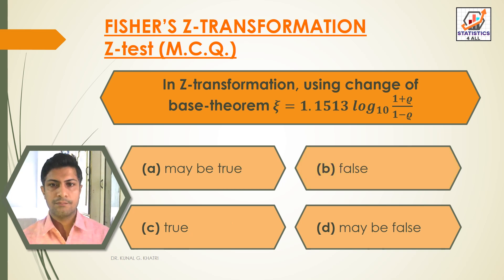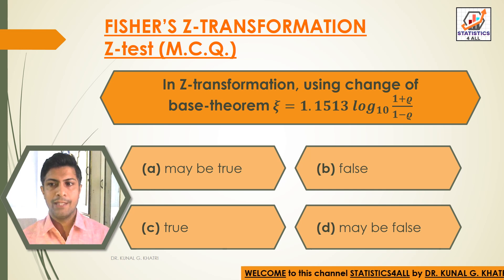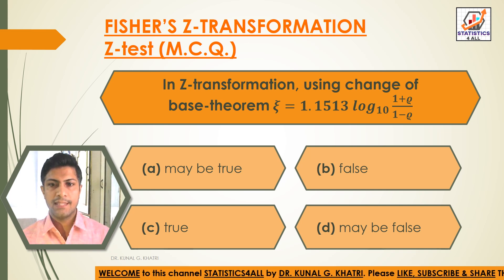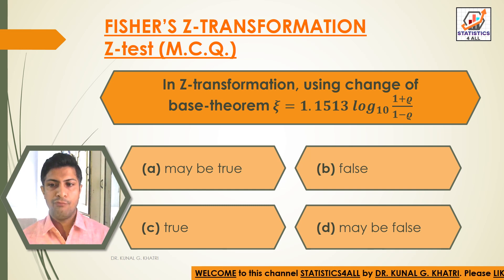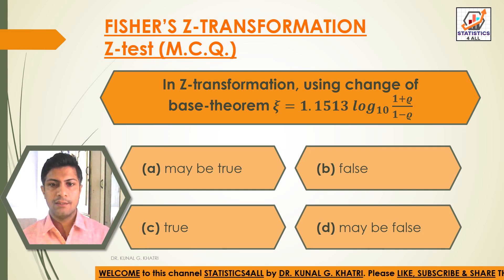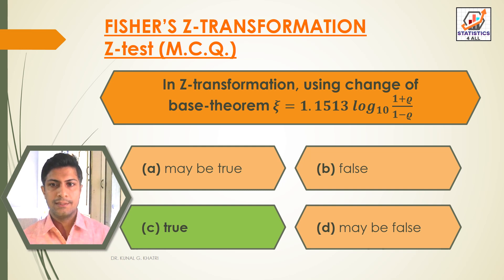Next question. In Z-Transformation, using change of base theorem, Z is equal to half log of (1 plus rho) divided by (1 minus rho), to the base E. Option A: May be true. Option B: False. Option C: True. Option D: May be false. Here we have the answer: Option C, True. In Z-Transformation, using change of base theorem, Z is equal to 1.1513 log of (1 plus rho) divided by (1 minus rho), to the base E.